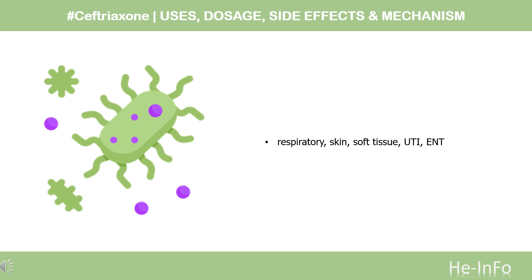Organisms that are generally susceptible to ceftriaxone include S. pneumoniae, S. pyogenes, group A beta-hemolytic streptococci, coagulase-negative staphylococci, some Enterobacter spp., H. influenzae, N. gonorrhoeae, P. mirabilis, E. coli, Klebsiella spp., M. catarrhalis, B. burgdorferi, and some oral anaerobes.